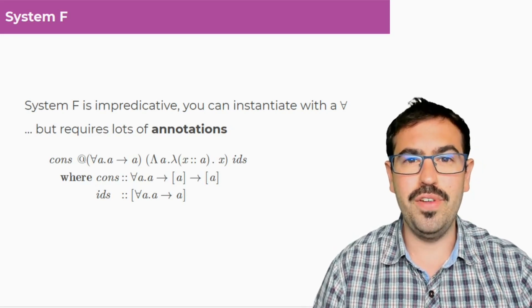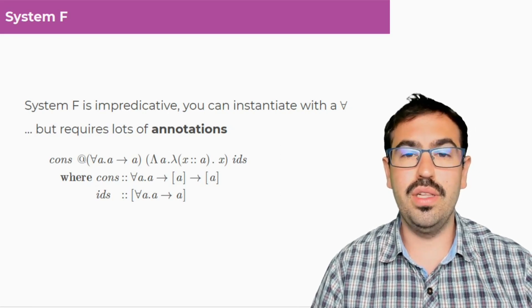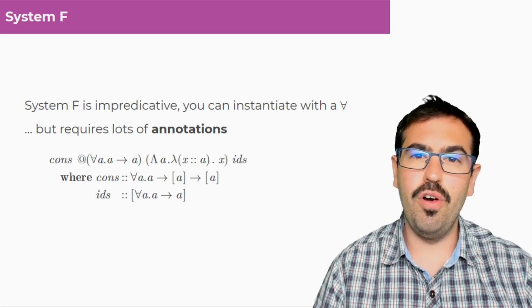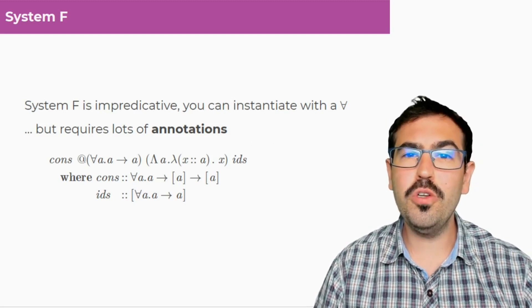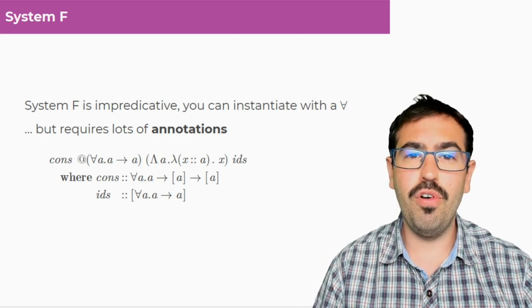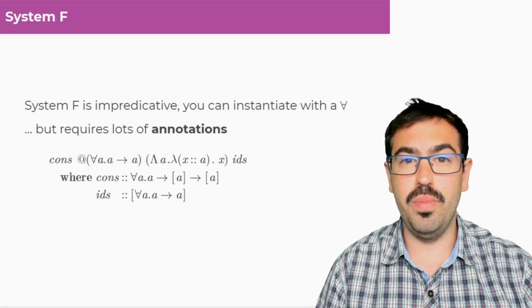In fact, in System F, you need to annotate every time you instantiate with a type application like I'm doing here with at for all A dot A to A, and you also have to annotate every time you generalize, every time you need to have a for all in a type with a big lambda like I'm doing here in the big lambda for the first argument.